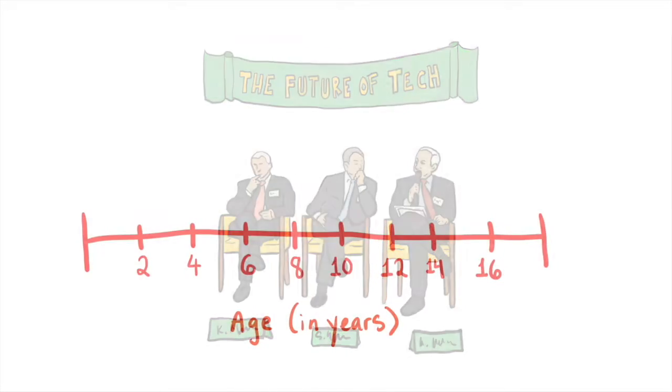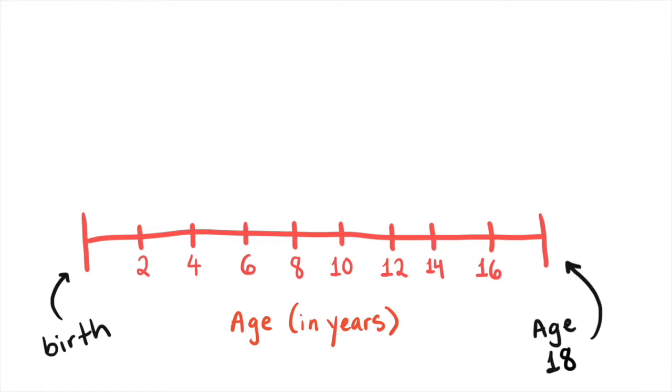But did you know that these stereotyped beliefs are common in children too? Children as young as six years old believe that girls are less interested than boys in STEM subjects like computer science and engineering.